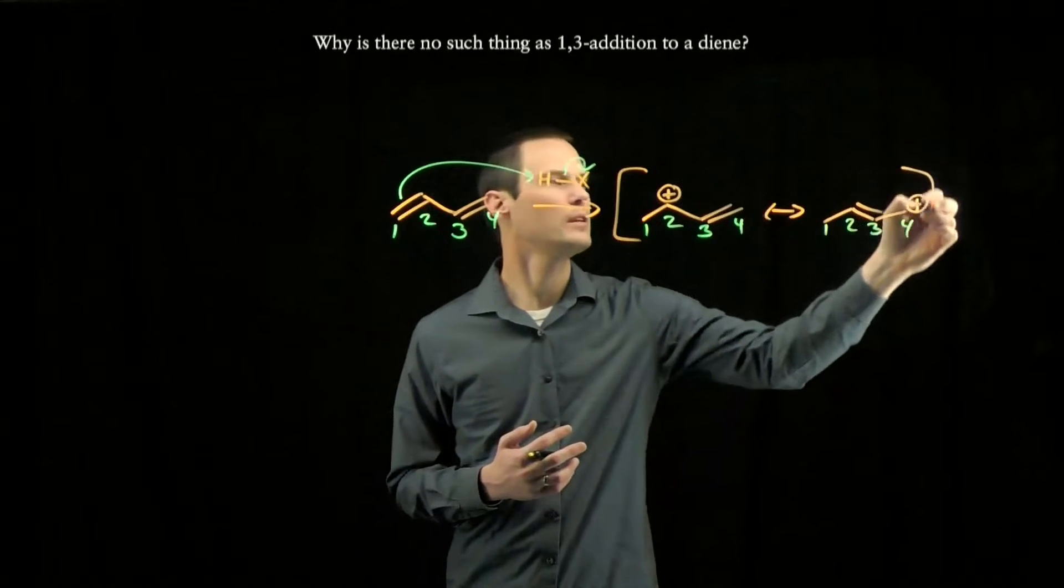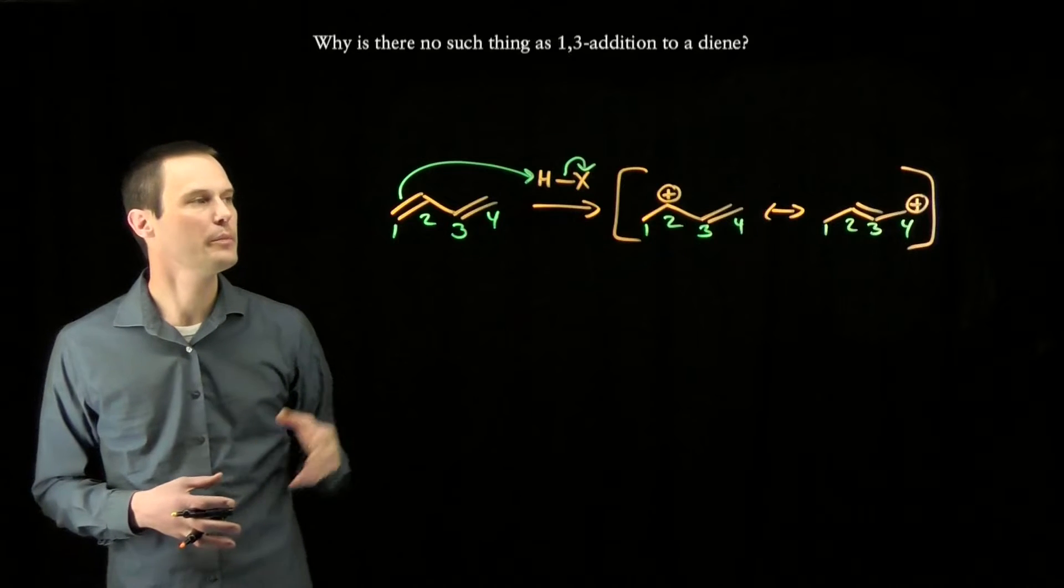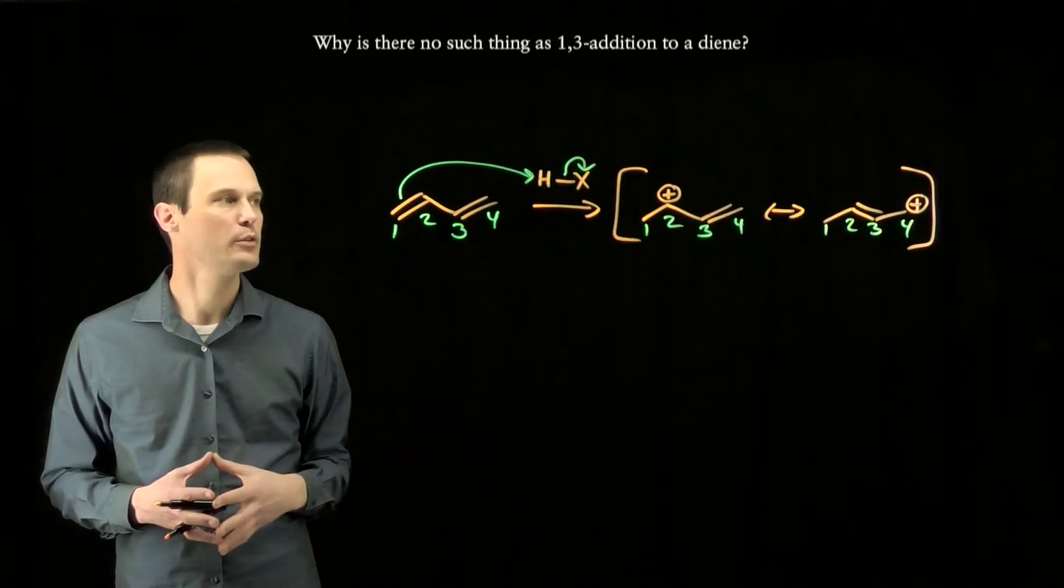If through resonance the carbocation only resides at carbon two and carbon four, then only carbon two and carbon four can be electrophilic. Carbon three can never be electrophilic.